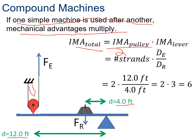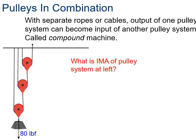If we've got separate ropes or cables, then the output of one pulley system can become an input of another pulley system. This is called a compound machine.